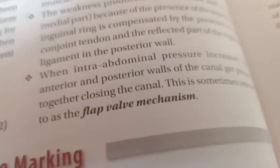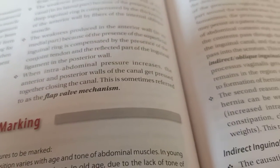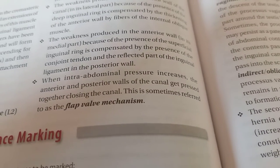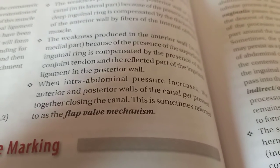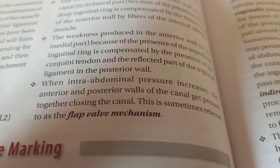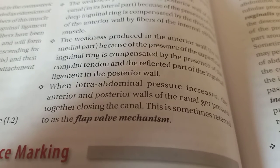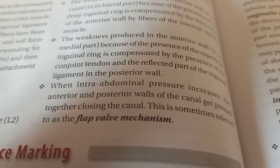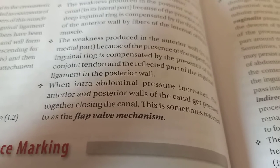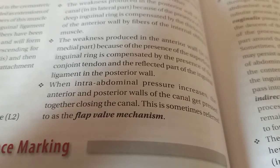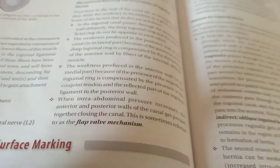When the intra-abdominal pressure increases, the anterior and posterior walls of the canal get pressed together, closing the canal. This is referred to as the flap valve mechanism. Whenever there is increased pressure during coughing, defecation, urination, or lifting heavy weights, the abdominal muscles contract, and the canal is kept closed so the contents will not come out.